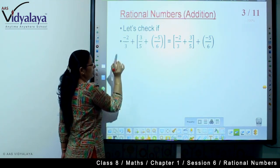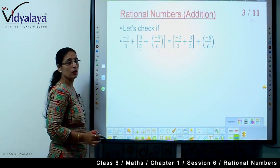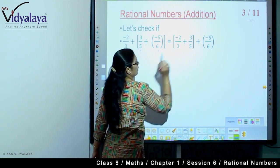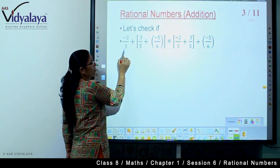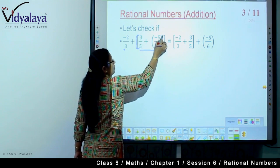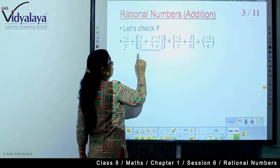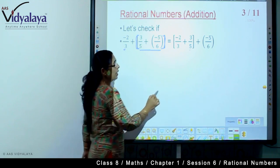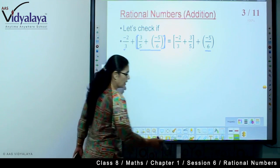So today we have three rational numbers: minus two upon three, three upon five and minus five upon six. Now you are seeing that these are the same digits here, but the difference between these two is here we have minus two upon three separate, and these two rational numbers are in one bracket.